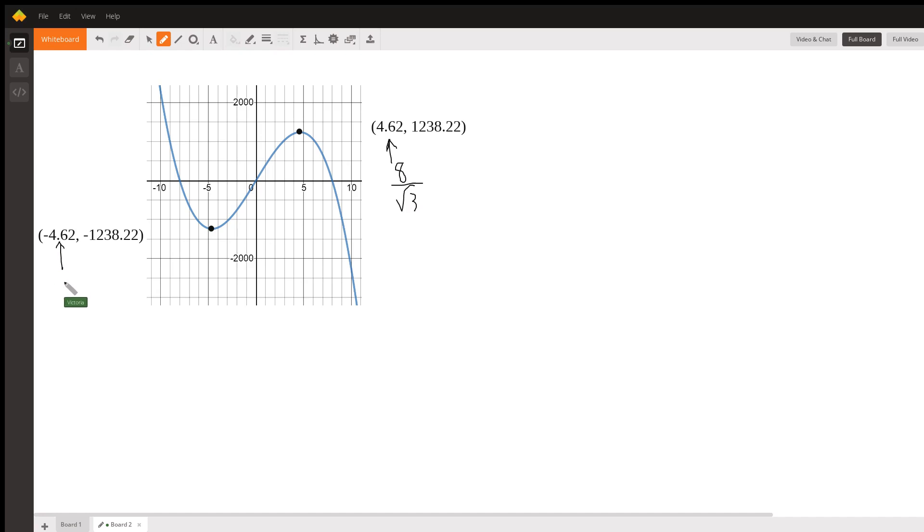And this number is negative 8 over the square root of 3. But the problem suggests that we approximate it to 2 decimal places. And so this is our h that gives us the maximum volume.